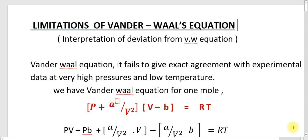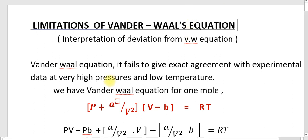In this video, we are discussing the limitations of the Van der Waals equation. In the last video, we explained the graphical representation and how it deviates. At low pressure and higher temperature, the real gas will show ideal behavior. Today, we are discussing how the Van der Waals equation failed to give exact agreement with experimental data at high pressure and low temperature.